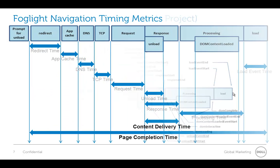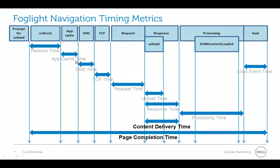In Foglight, we've used this standard and all of these timings are available. Two of the big times we look at are the page completion time, which represents the end-to-end time in terms of the navigation timing standard, and the content delivery time, which is basically where the response is happening. These most accurately reflect the same things we pick up in the sniffer called end-to-end time and back-end processing time. All the other times are net new and can really be used to analyze everything set up in the browser — these quite often can cause problems that aren't reflected in the application and aren't the fault of the application either.